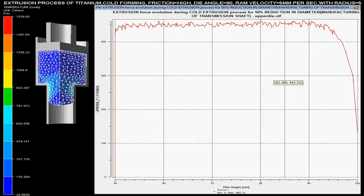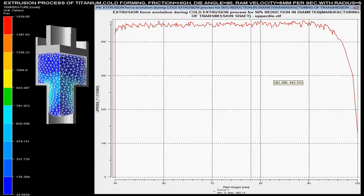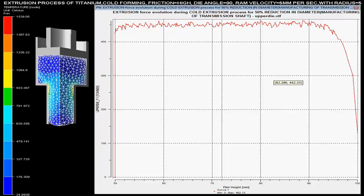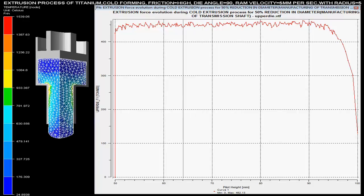Ram velocity is set as 5 mm per second with the radius of 5 mm. Die angle is specified as 90 degrees and it is specified that there is high friction during this cold extrusion process.